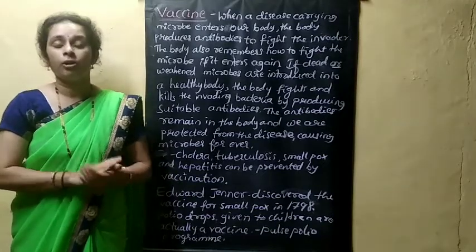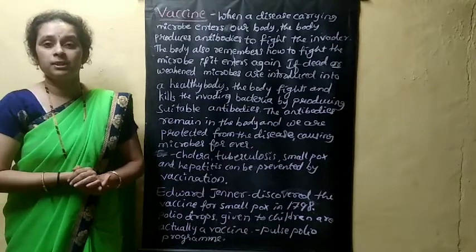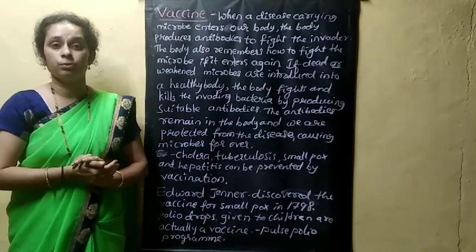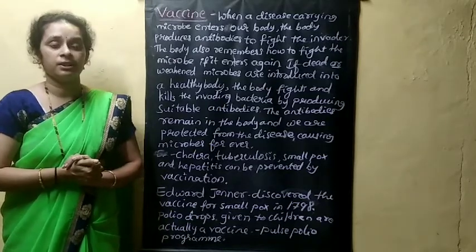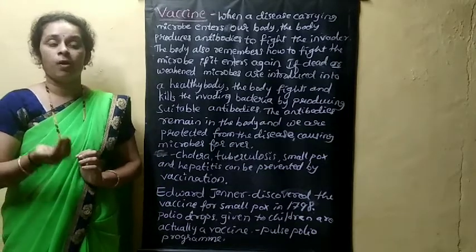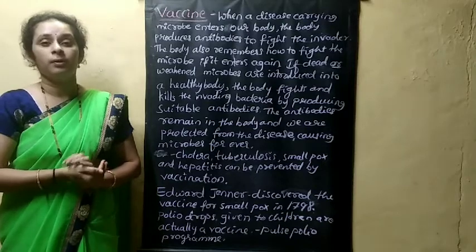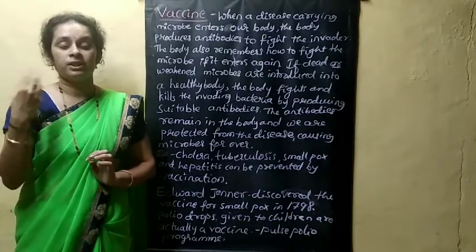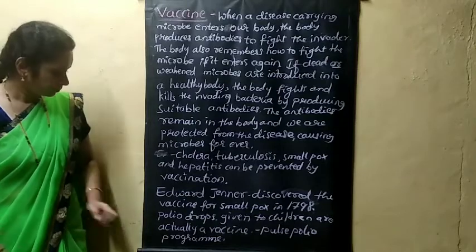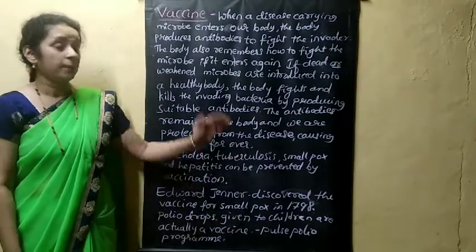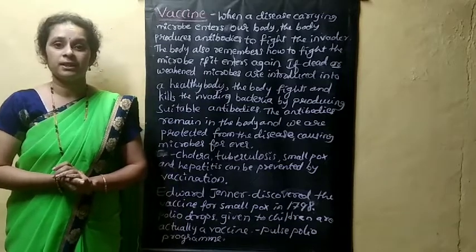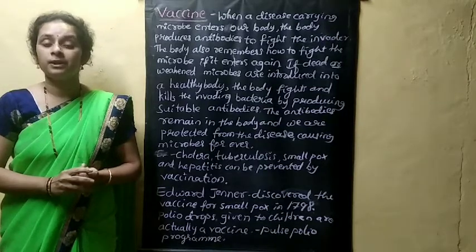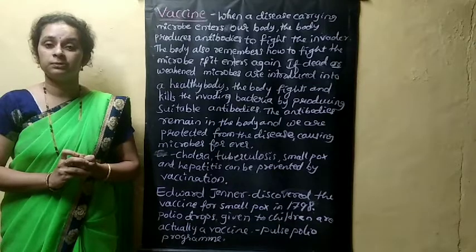Vaccines are prepared by microorganisms. These microorganisms help to protect animals as well as human beings from different diseases. Doctors give vaccines or antibiotics to protect organisms from infections and a variety of diseases. The main medicinal uses of microorganisms are in the preparation of antibiotics and in the preparation of vaccines.